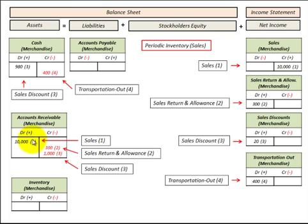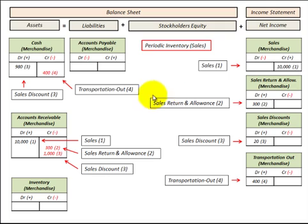Say we make a sale of $10,000 on account: we debit accounts receivable and increase it by $10,000, and the corresponding credit entry is to Sales under revenue accounts, crediting that for $10,000.